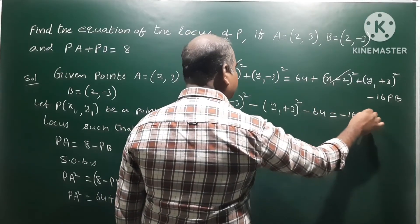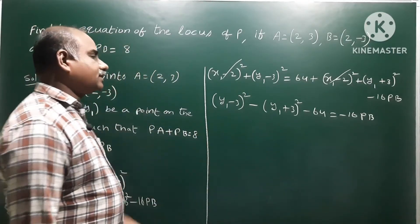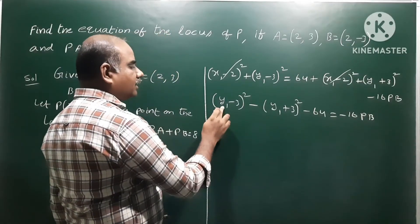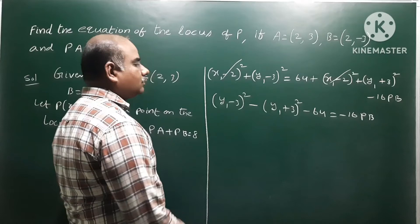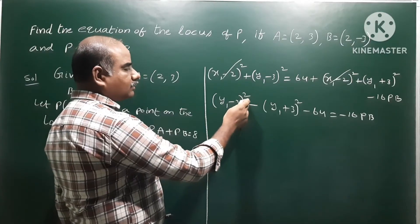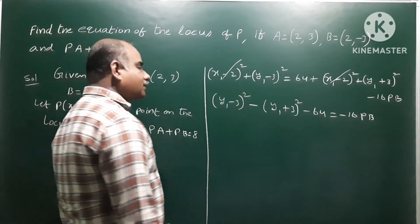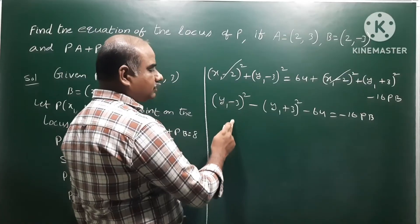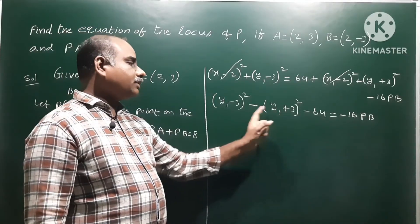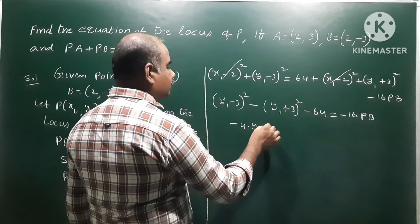Except for the 16PB term, all remaining terms go to the left side. We apply the identity (a minus b)² minus (a plus b)² equals minus 4ab. Here a² plus b² cancels, and 2ab terms give minus 2ab minus 2ab equals minus 4ab, where a is y1 and b is 3.